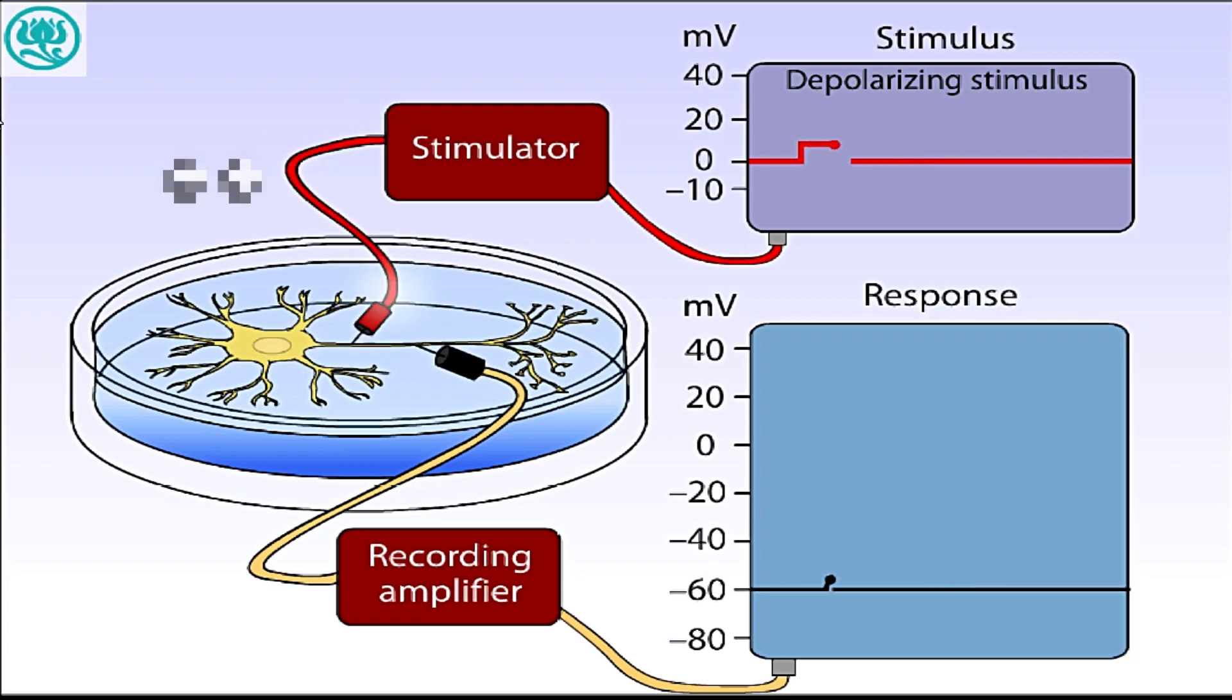If the stimulus is sufficient to push the membrane potential past the firing threshold for the neuron, such as the second stimulus in this example, then an action potential is generated.